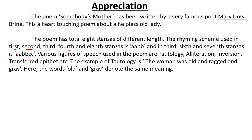Various figures of speech used in the poem are tautology, alliteration, inversion, and transferred epithet. An example of tautology is the line: 'The woman was old and ragged and gray' — the first line of the poem. Here the words 'old' and 'gray' denote the same meaning. Tautology occurs when two different words are used in the same poetic line having the same meaning. So 'old' and 'gray' are both expressing the same meaning — that is the example of tautology.